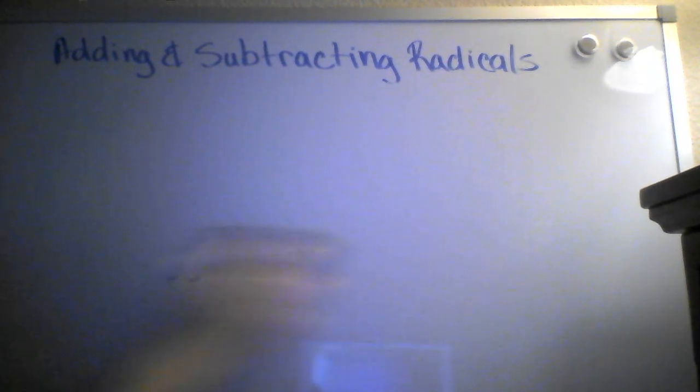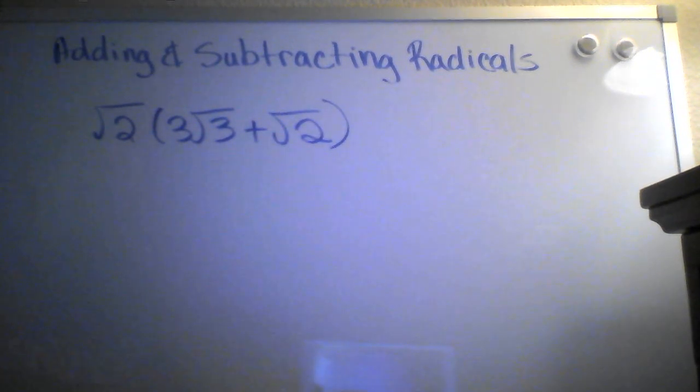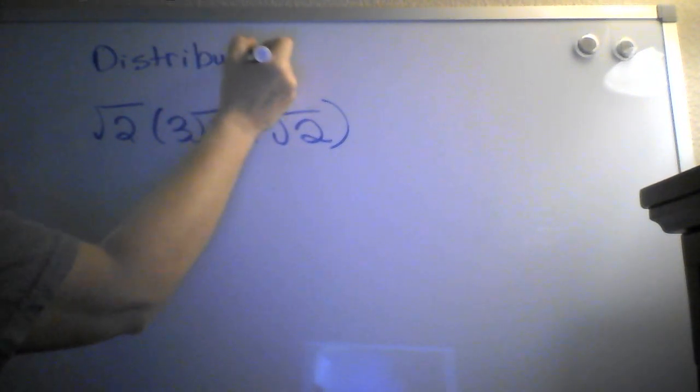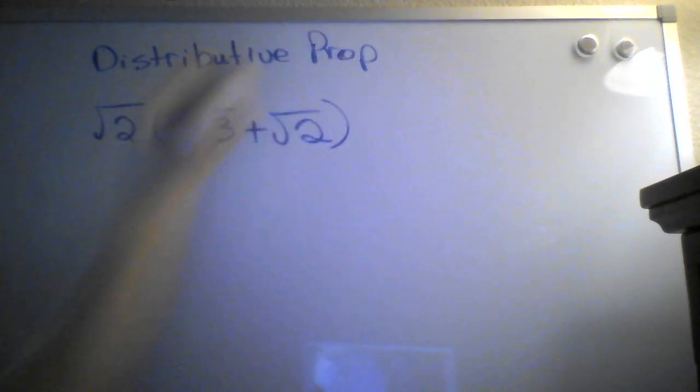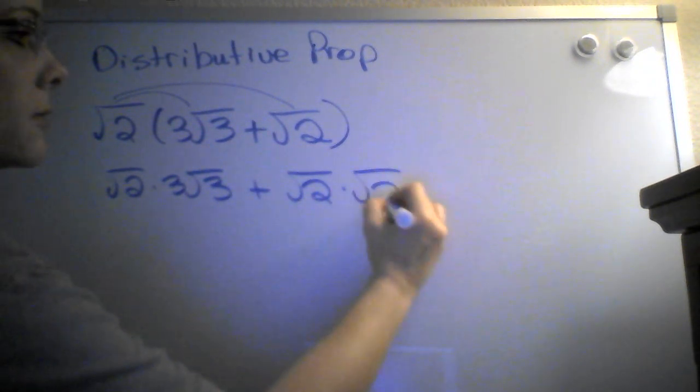Let's do a little bit with the distributive property. Let's say I have radical 2 times the quantity 3 radical 3 plus radical 2. This is the distributive property. So we take the number that's outside the parentheses, and we distribute it to both. So we're going to take radical 2 times 3 radical 3 plus radical 2 times radical 2.